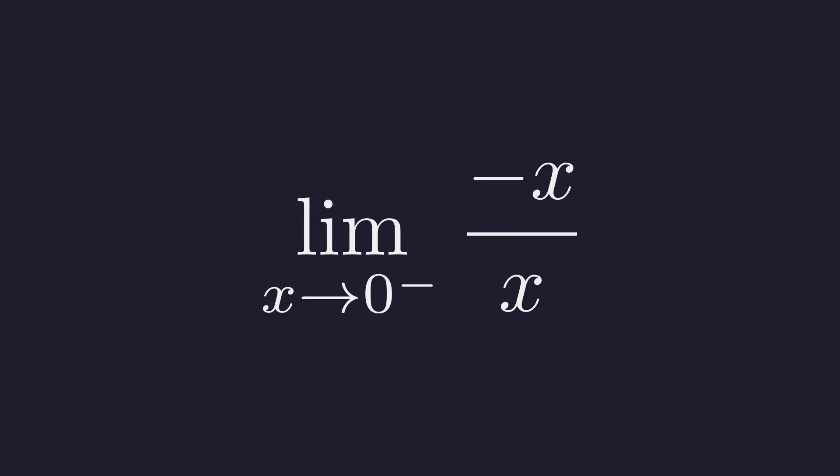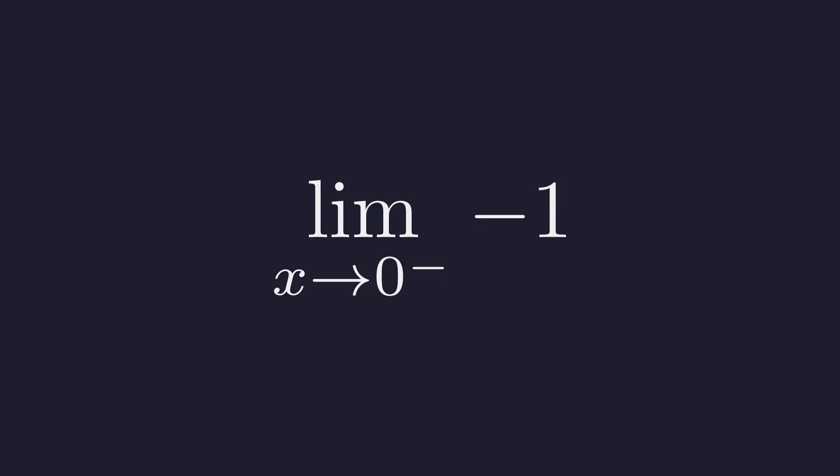We replace the absolute value of x with negative x. And negative x divided by x simplifies to negative one. We now have the limit of the constant negative one. The limit from the left is therefore negative one.